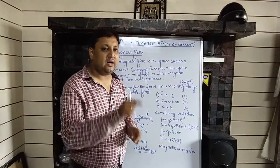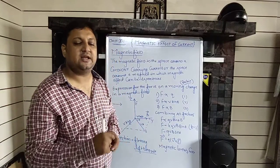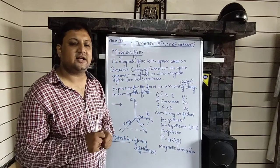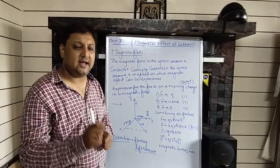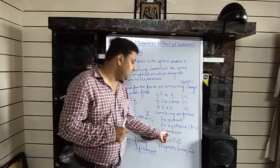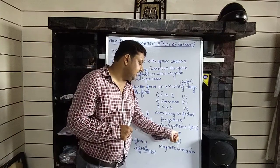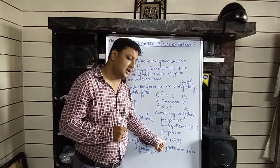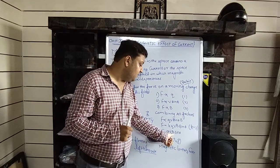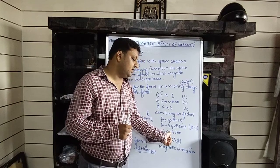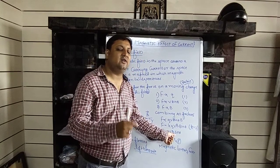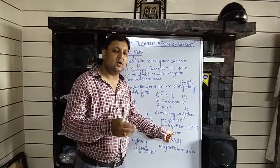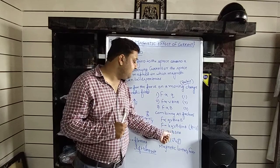From class 11, you know that A cross B equals AB sinθ. Here, q is a scalar quantity written outside. Velocity v is a vector quantity, and the magnetic field B is also a vector quantity.